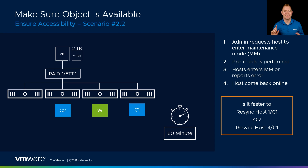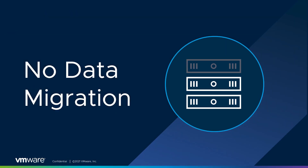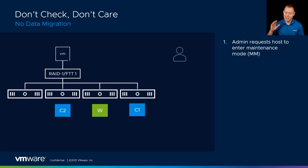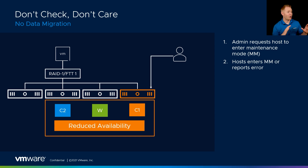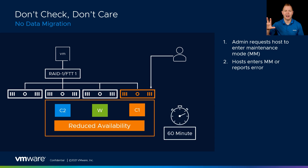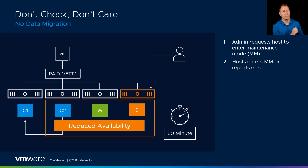Now let's talk about the no data migration option. No data migration just puts the host in maintenance mode without doing any checks whatsoever — it doesn't verify whether we'll still have access to our objects. After that, it behaves exactly like the ensure accessibility option with that 60-minute timer. You might be thinking: why don't we always use no data migration? That's because it doesn't check the impact of this action on our objects.